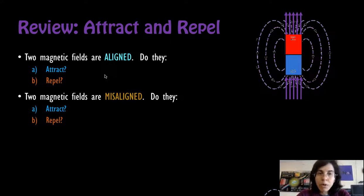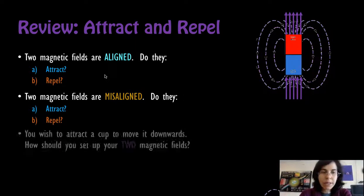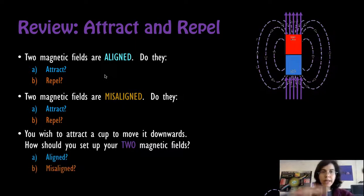We'll use this for motors, making something spin out of the way. And we'll use it for speakers, making two things move apart. Now, we want to move things apart and together, apart and together. You want your speaker cup to move downwards. How should you set up your two magnetic fields? Aligned or misaligned? What do you think? If you answered aligned, you are ready to see how speakers work.